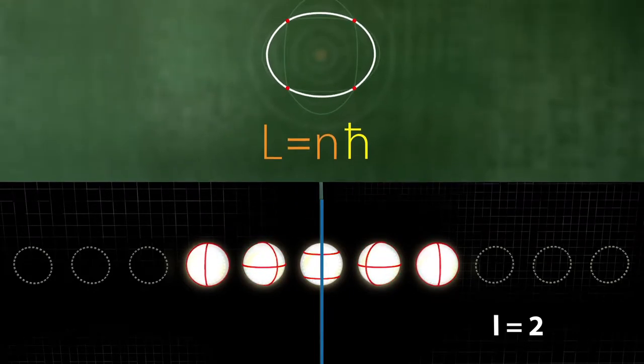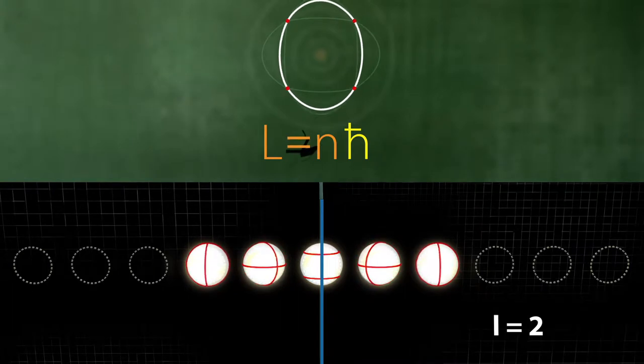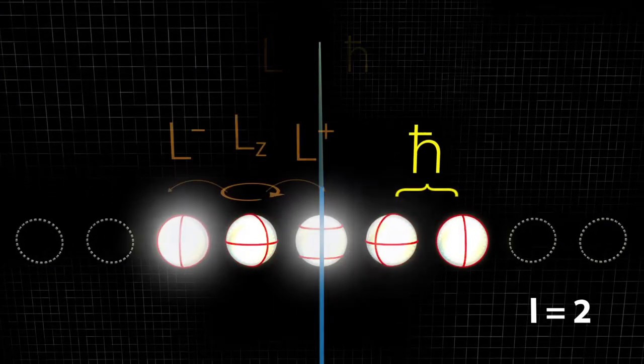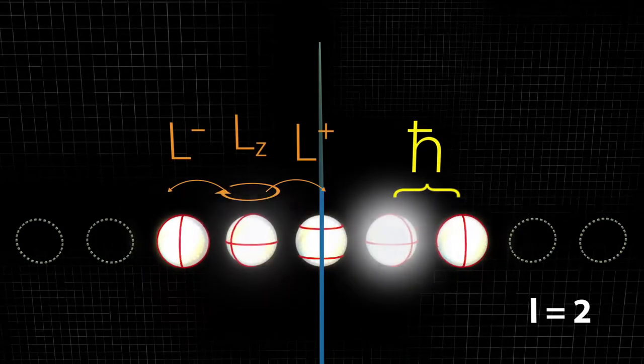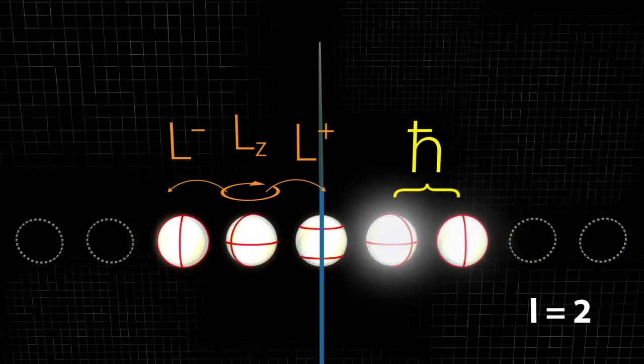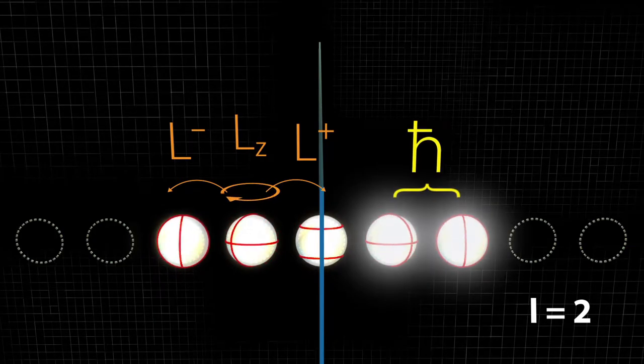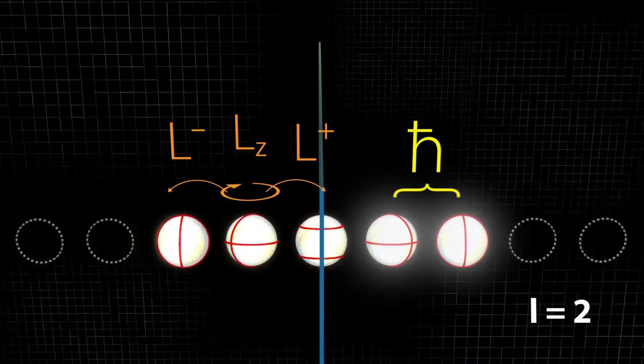In quantum physics, L is equal to n times h-bar does not hold. General superposition states do not have a specified angular momentum. They have only their respective eigenstates. Therefore, h-bar is the smallest possible measurable difference of the angular momentum.